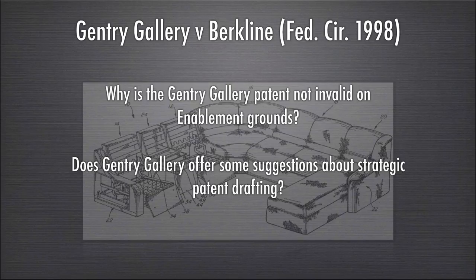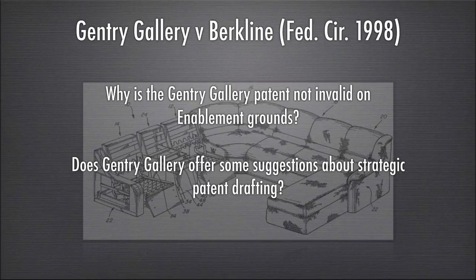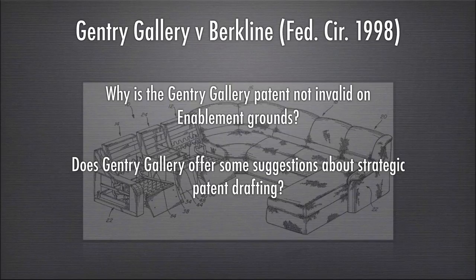The court in Gentry Gallery said in a fairly surprising decision that the claim was invalid under the written description requirement — because the patentee had specified in the description that the only location for the controls was on the console itself, there was no possibility for them to claim beyond that. Any claims directed beyond controls on the console were therefore invalid. This was a major decision because it suggested for the first time in the modern era that the written description requirement was really distinct and independent from the enablement requirement.